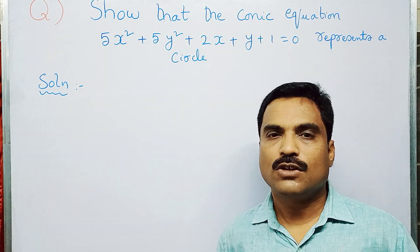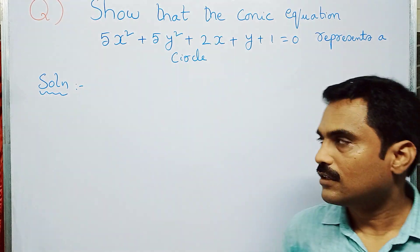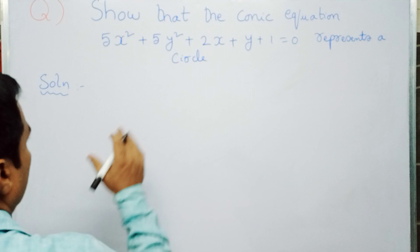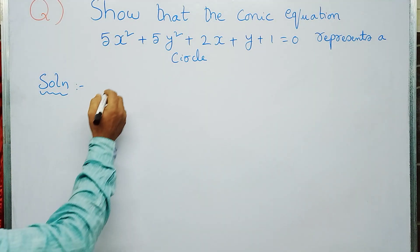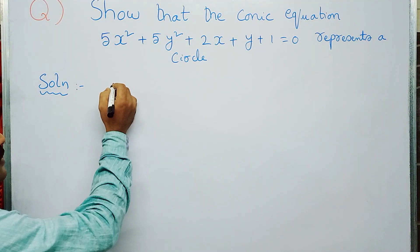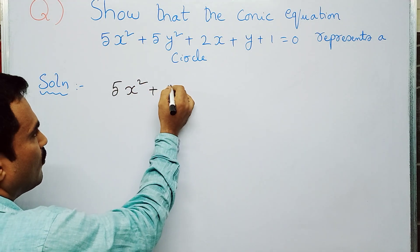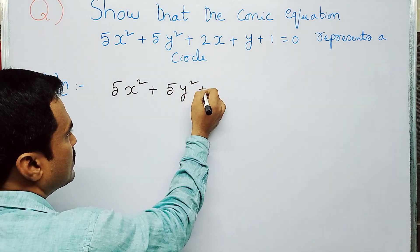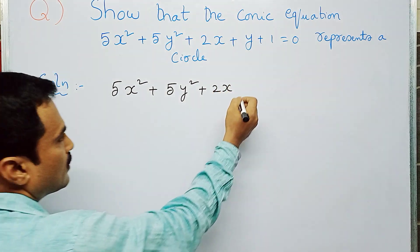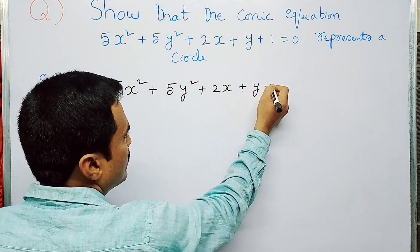So as I told you before, first write the given equation of conic. The given equation of conic is 5x² + 5y² + 2x + y + 1 = 0.